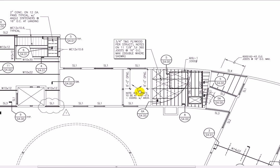Let's go over here. Now what I'm seeing here: tongue and groove plywood. Structural notes on 11 and 7/8 inch TJIs. TJI is a plywood I-joist. So now we have wood construction over here. And I see AHU1, 3300 pounds — so this looks like it's supporting an air handling unit. Double joist. This is a little wood mezzanine.